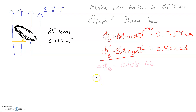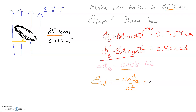Now we can find the induced EMF using the same formula: negative N times change in flux over change in T. We have 85 loops, change in flux of 0.108, and time of 0.75 seconds. There is a negative out front, so this will be negative. Putting it all together — 85 times 0.108 divided by 0.75 — we get around negative 12.2 volts.